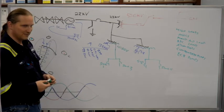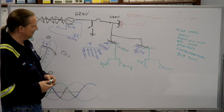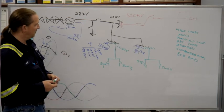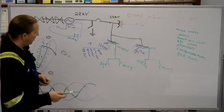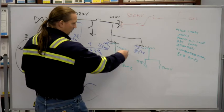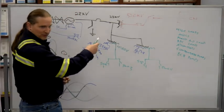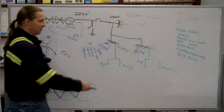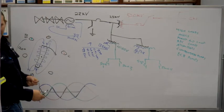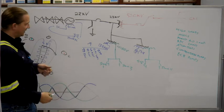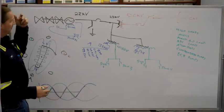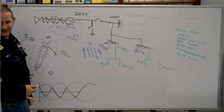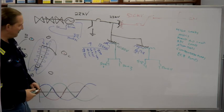On our plant site, we send this 4160 out to places, and then transform it down to 480 when it gets there. And that's kind of the same principle. You're minimizing losses. So you've got 4160 that goes all the way out to the river water pump house. And then on either side of that building, there's a transformer that takes it from switchgear one, switchgear two, down to MCCs out there.